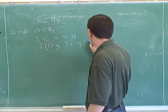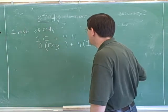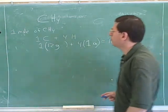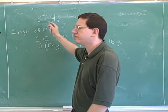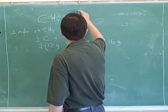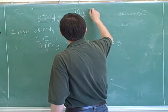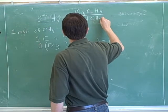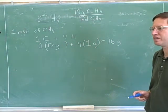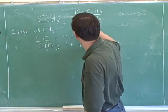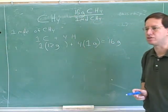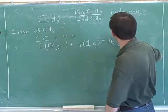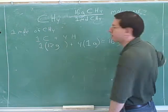The hydrogens are approximately one gram each, so that would be 12 plus four, or 16 grams. In compact form, this tells us that we have 16 grams of methane per mole of methane. One mole of methane would have a mass of 16 grams. This is called the molar mass of methane.